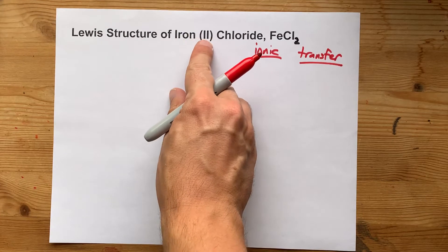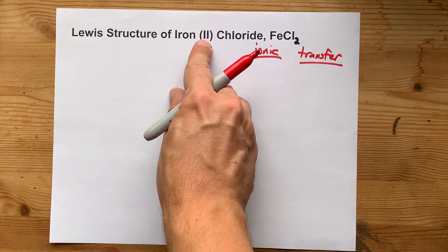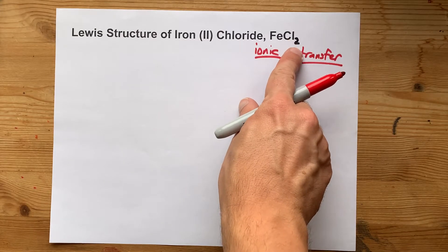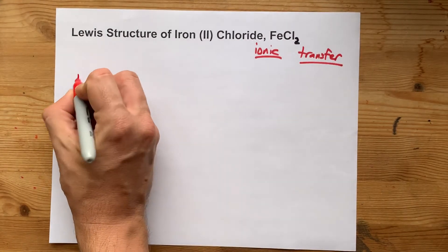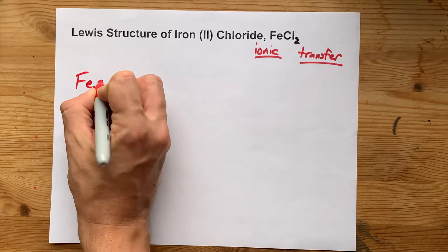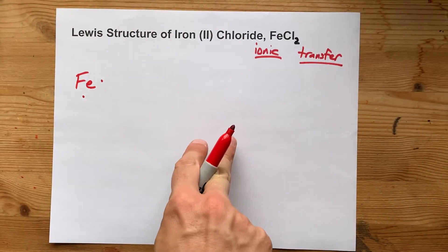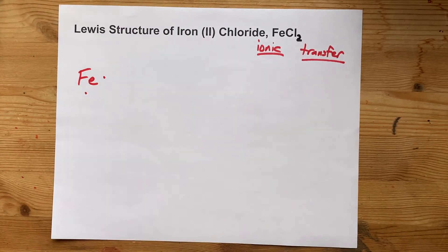Iron here will end up with a charge of positive 2. It says so right there, and if you have the formula, it says so as the superscript or subscript on chlorine. So I want you to draw yourself an iron atom with that many electrons. You're going to lose those two electrons, and that's what's going to give it the positive 2 charge.